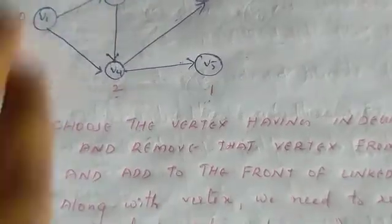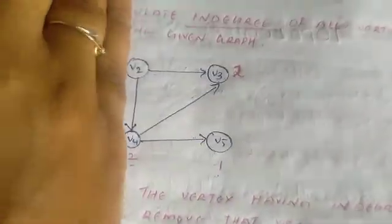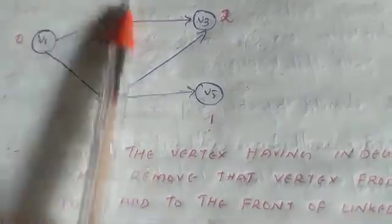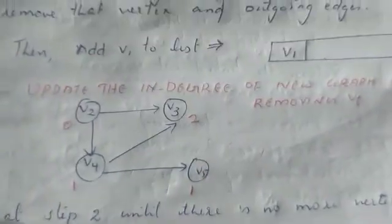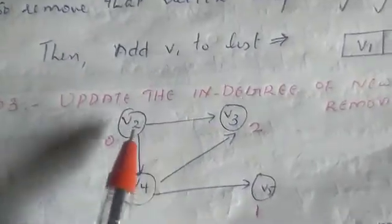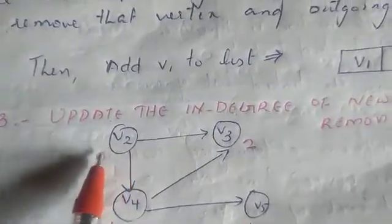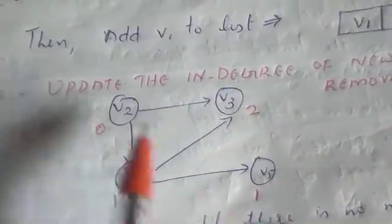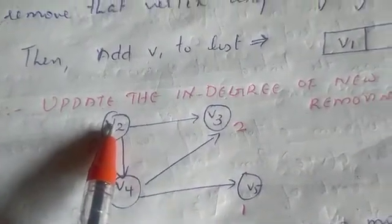We remove the outgoing edges. The remaining vertices are V2, V4, V3, V5. Removing those edges automatically changes the in-degrees. Now we update the degrees of the new graph: V2 is 0, V4 is 1, V3 is 2, V5 is 1.